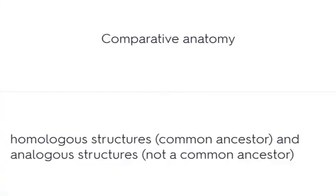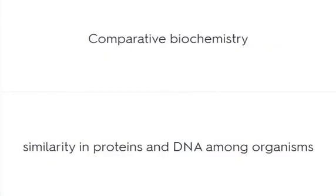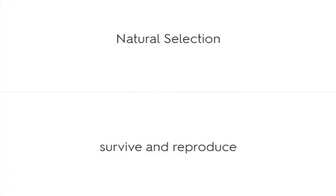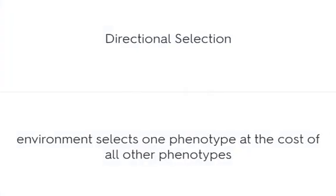Comparative anatomy involves homologous structures and analogous structures. Comparative biochemistry examines similarity in proteins and DNA among organisms. Natural selection: survive and reproduce. Directional selection: the environment selects one phenotype at the cost of all other phenotypes.